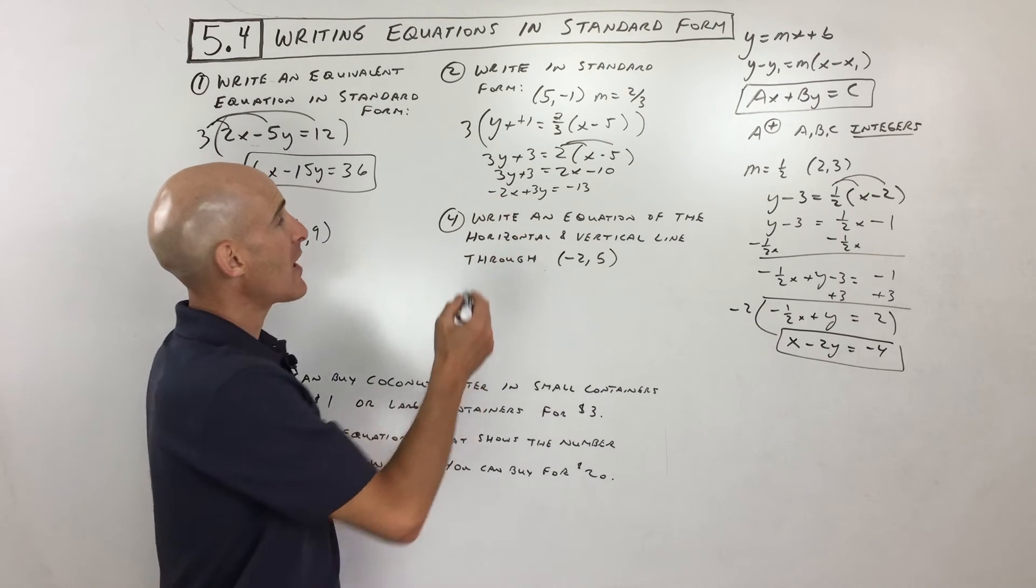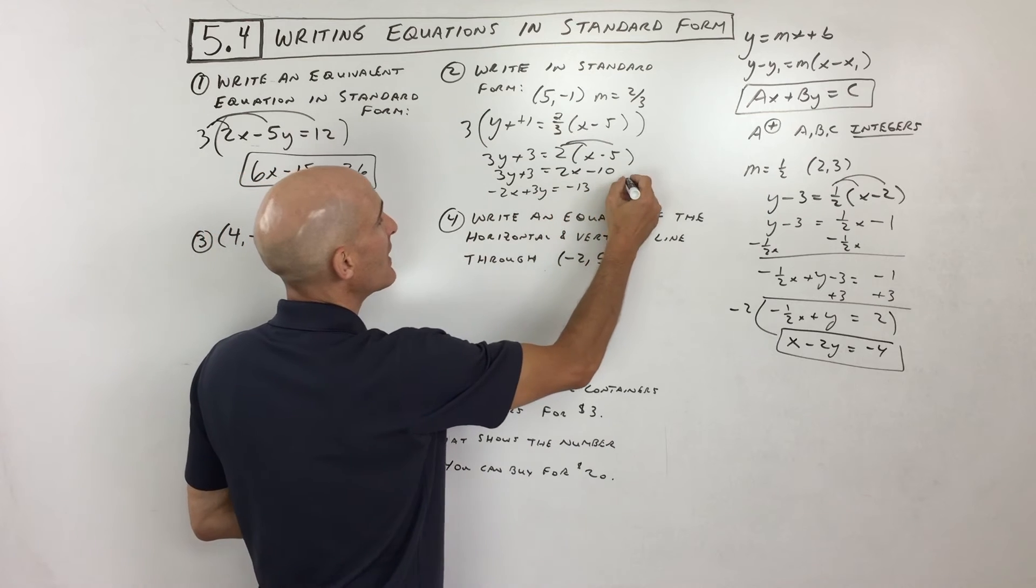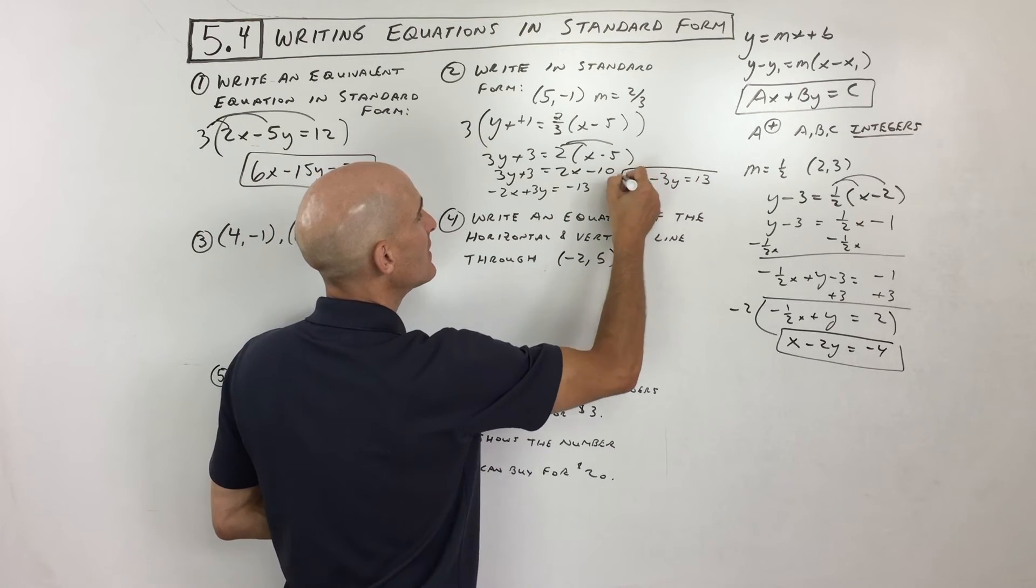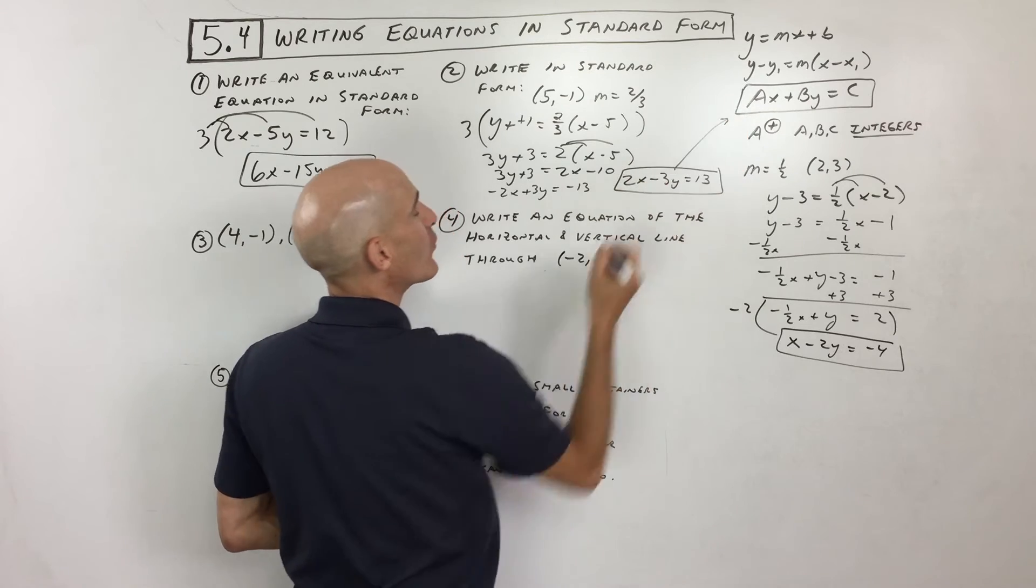Well, if you said negative 1, you're absolutely right. So let's multiply through everything by negative 1. That's going to make this 2x minus 3y equals 13. And you can see that's our standard form. Perfect.